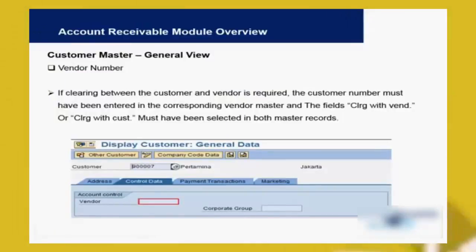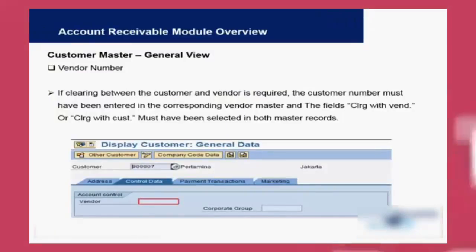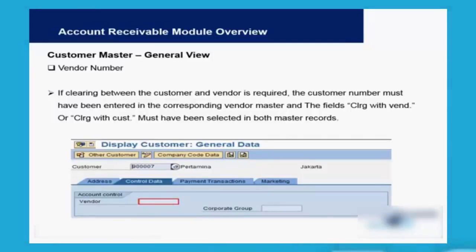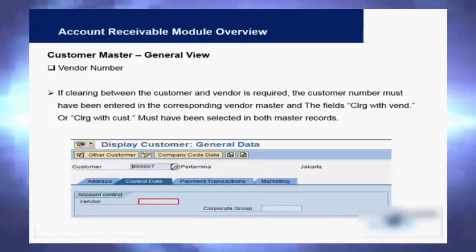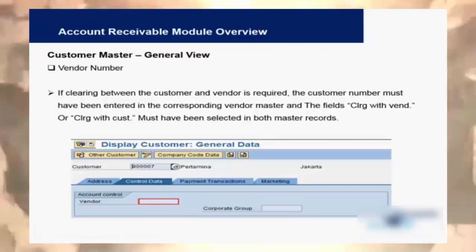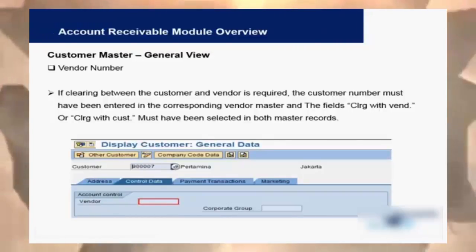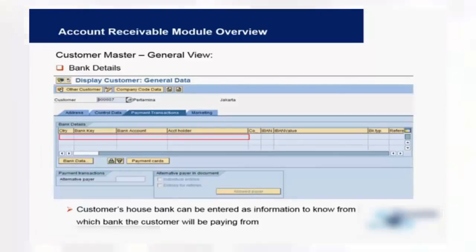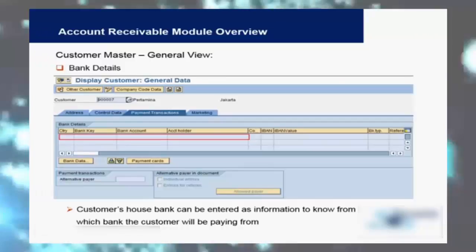Within the general view we also have a vendor number field. This is mainly for clearing purposes: if clearing is required between a customer and a vendor, the customer number must be entered in the vendor master and a vendor number must be entered in the customer master. We also have bank details such as country, bank key, bank account number, and IBAN number which need to be entered here.